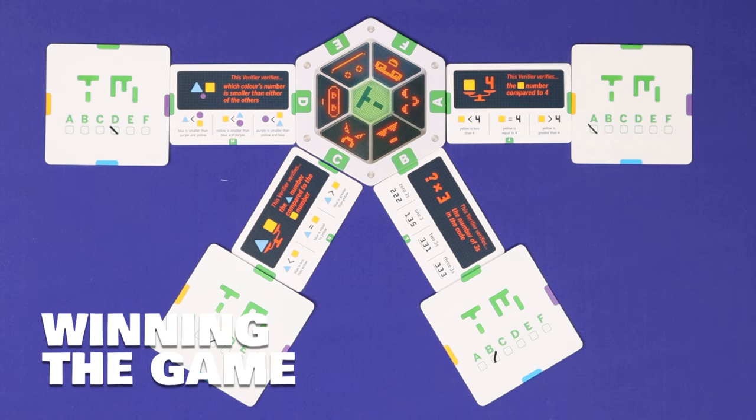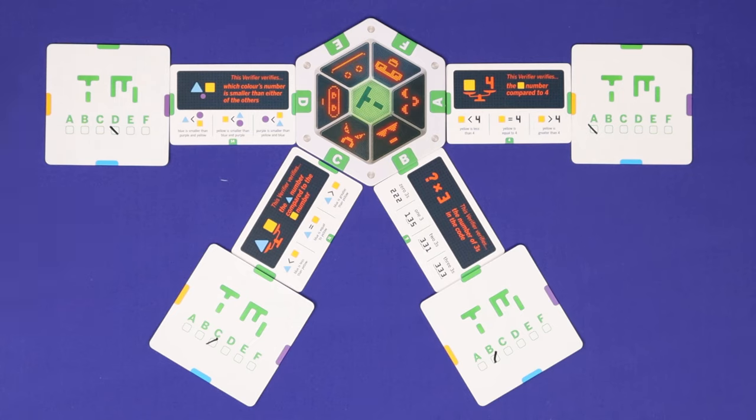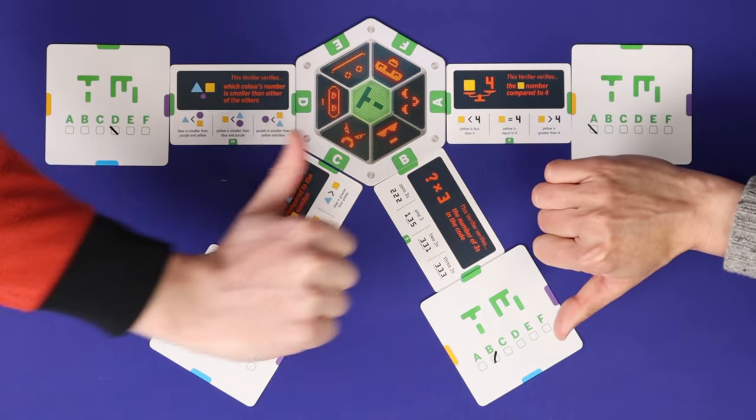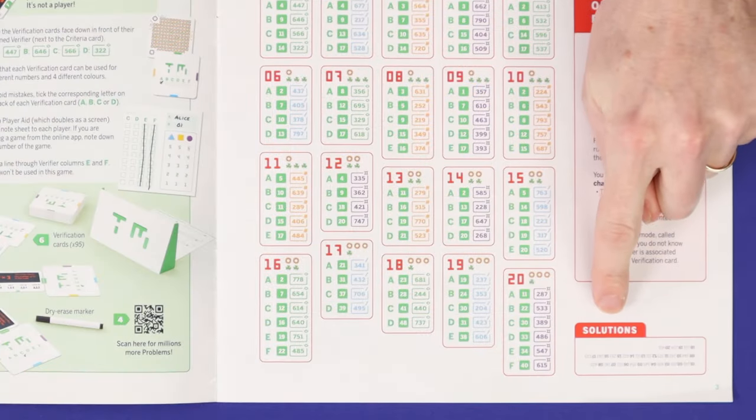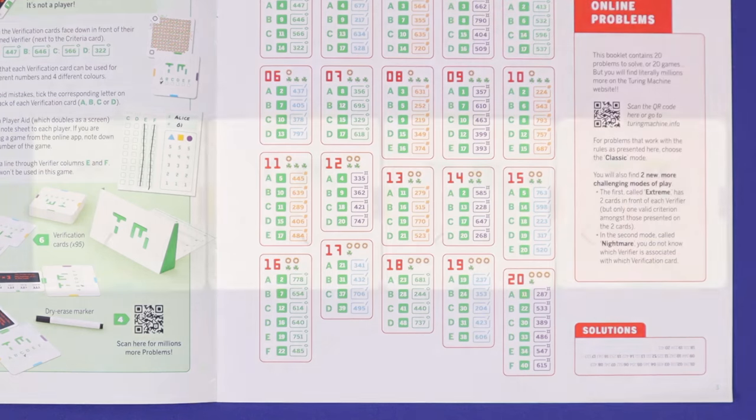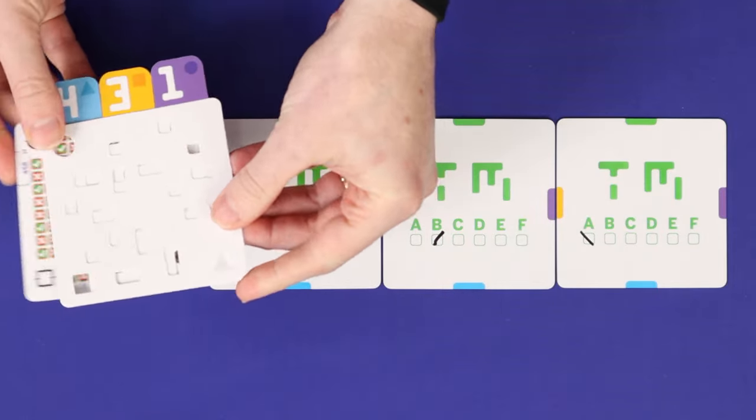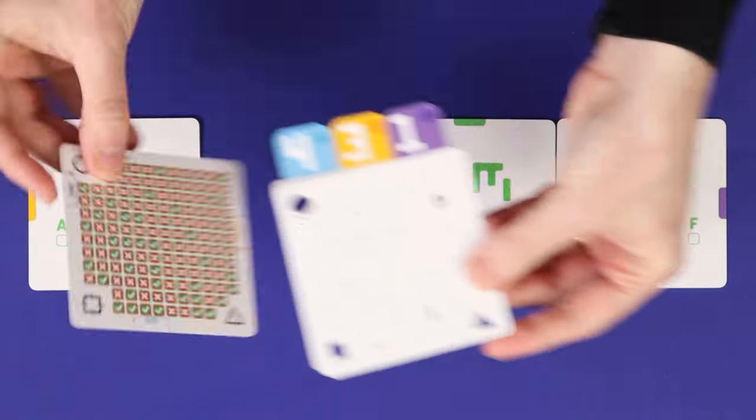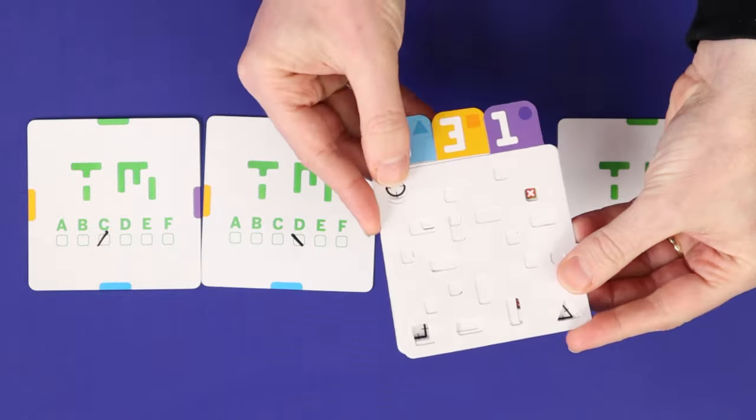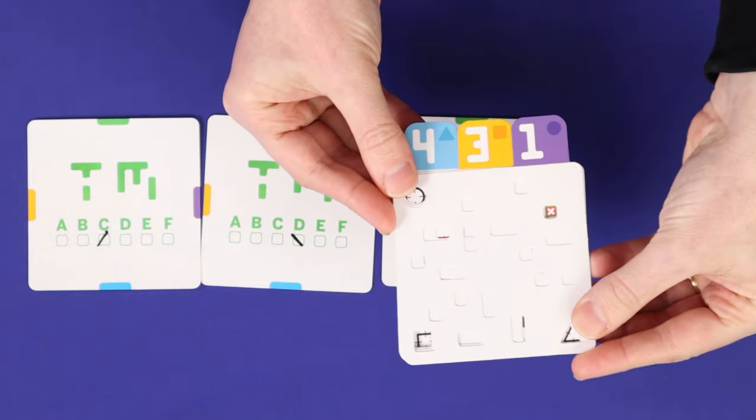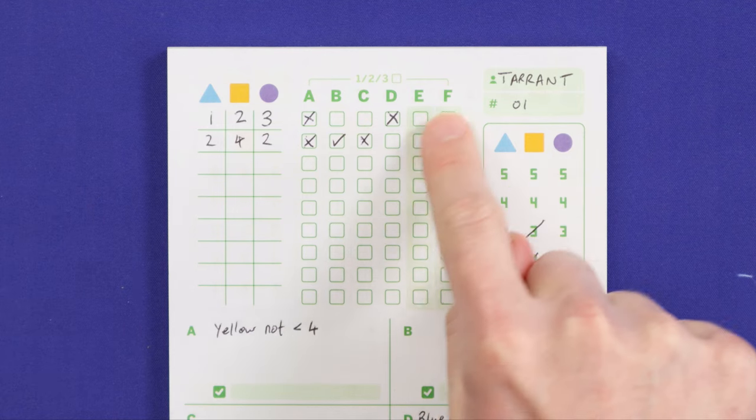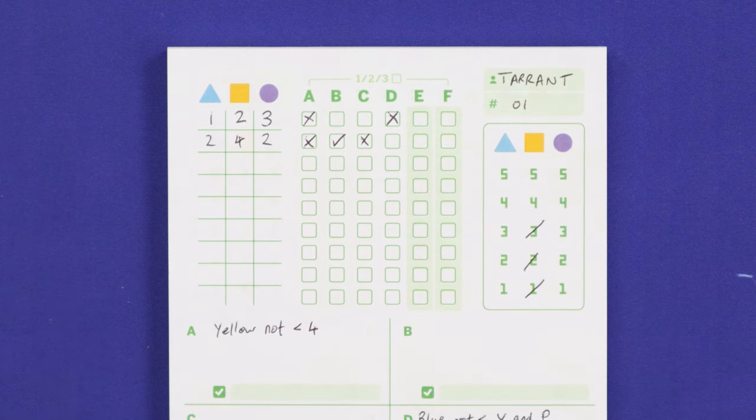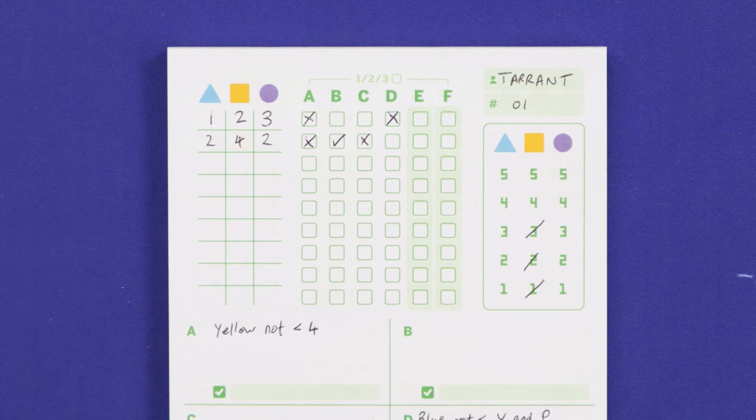Before moving to the next round all players now have the chance to solve the puzzle and win the game and players indicate whether they want to do this simultaneously with a thumbs up or thumbs down. Players who want to guess write down their answer on their sheet and then check their solutions in the rulebook or online. You could also check by verifying against all of the game's verifiers since only one code will show a tick on all of them. Any player who makes a mistake is out of the game and among all players who were correct this round whoever asked the fewest total questions across the course of the game wins the game. If tied victory is shared.